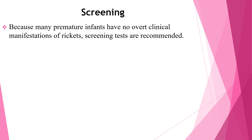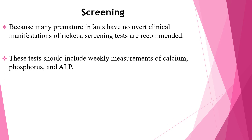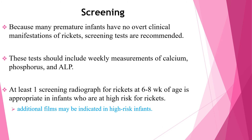Regarding screening: because many premature infants have no overt clinical manifestation of rickets, screening tests are recommended. Tests should include weekly measurement of calcium, phosphorus, and alkaline phosphatase. Periodic measurement of serum bicarbonate concentration is also important because metabolic acidosis causes dissolution of bone. At least one screening radiograph for rickets at six to eight weeks of age is appropriate in infants at high risk, and additional films might be indicated in high-risk infants.